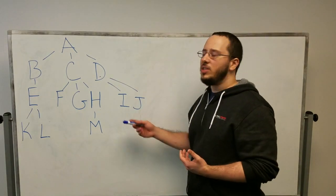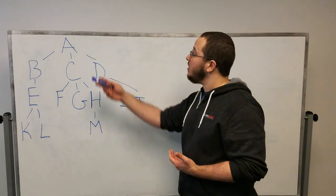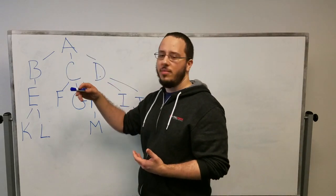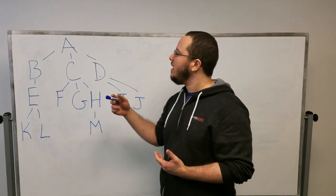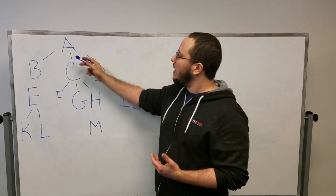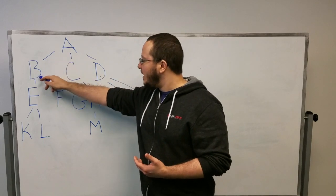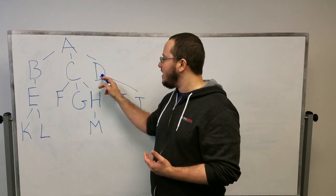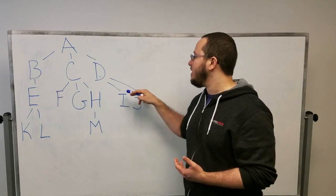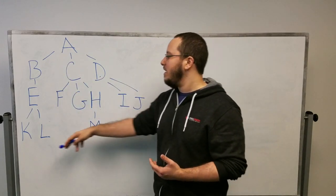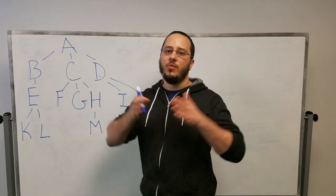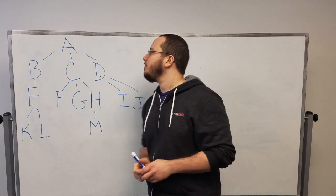With a breadth-first approach on this particular tree, given node A, it would execute the callback on A, then B, then C, then D, E, F, G, H, I, J, K, L, M — breadth-first.